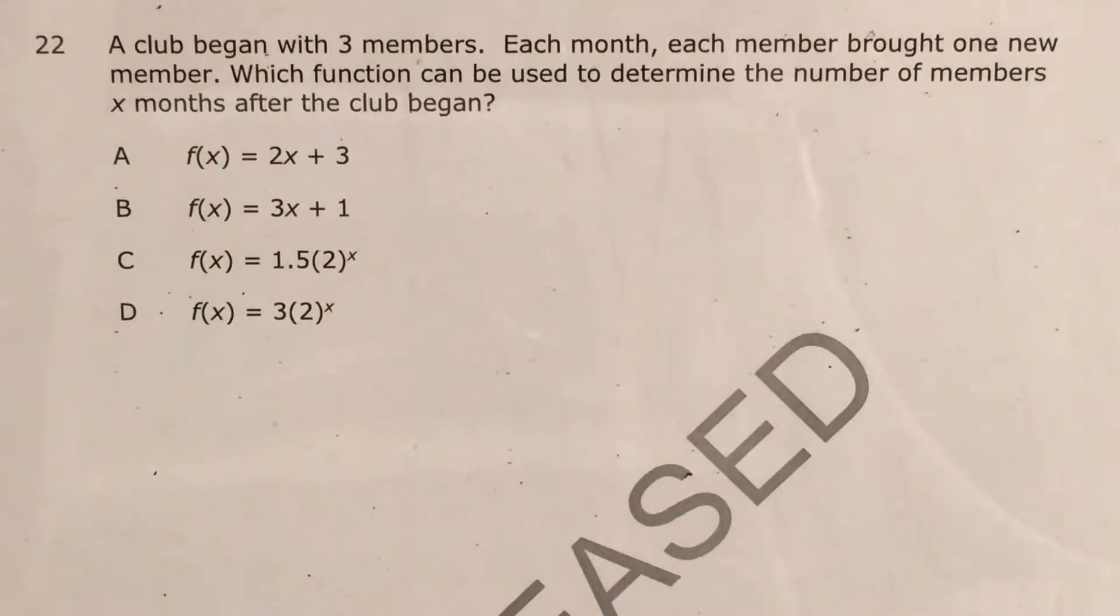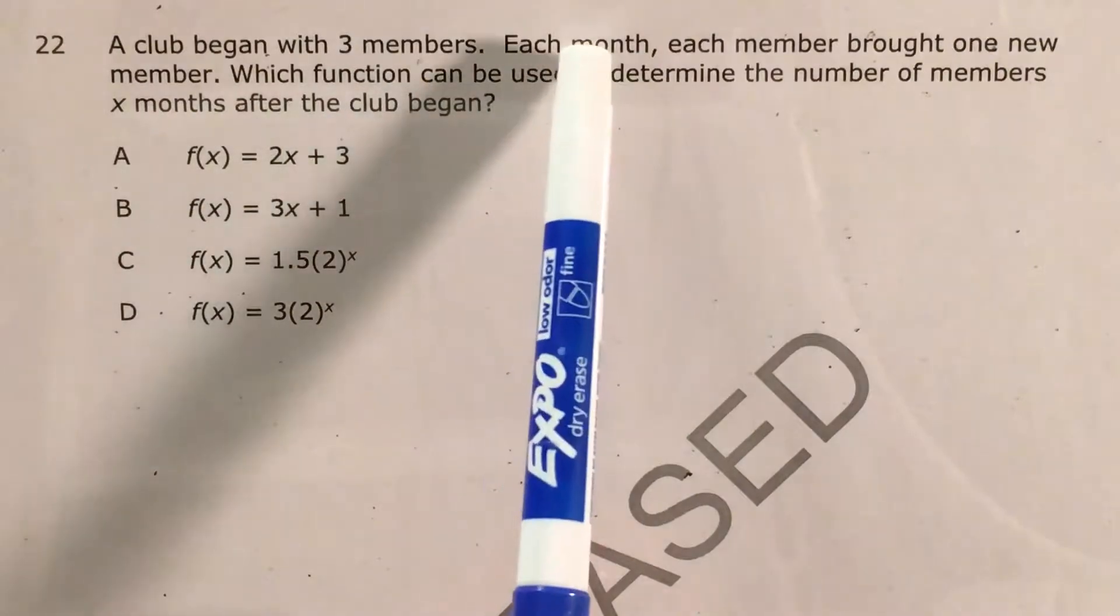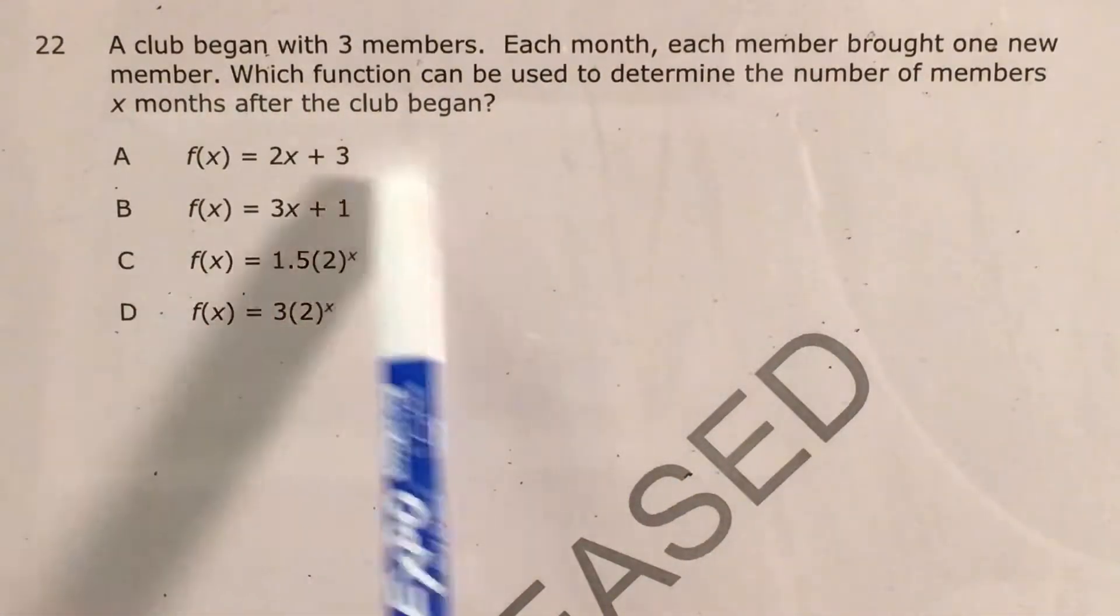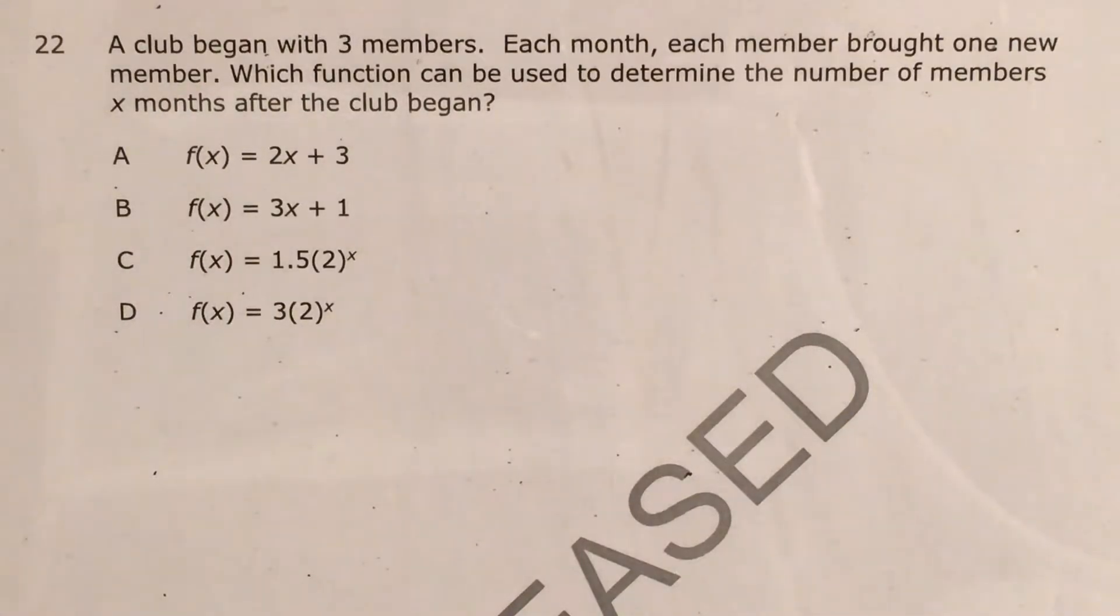This question tells us that a club began with three members, and each month each member brought one new member. We're trying to figure out the function that can be used to determine the number of members x months after the club began.